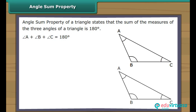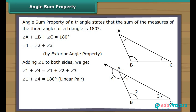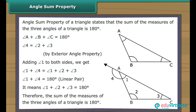Let us now prove the angle sum property. We extend angle BAC. Angle 4 equals angle 2 plus angle 3 by the exterior angle property. Adding angle 1 to both sides, we get angle 1 plus angle 4 equals angle 1 plus angle 2 plus angle 3. Since angle 1 plus angle 4 equals 180 degrees (linear pair), it means angle 1 plus angle 2 plus angle 3 equals 180 degrees. Therefore, the sum of the measures of the three angles of a triangle is 180 degrees.